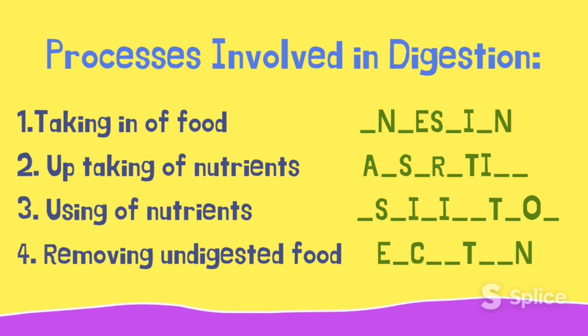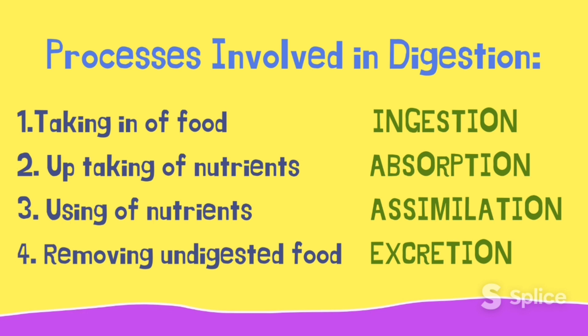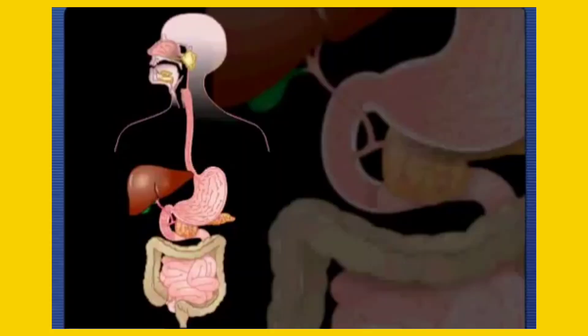Time is up. The first process involved in digestion is ingestion — that's the taking in of food. Second is absorption, the uptaking of nutrients from the food that you eat. Third, assimilation — the body will use those absorbed nutrients to perform certain activities. Finally, the removal of waste.